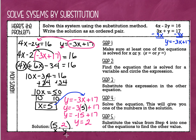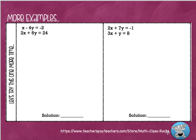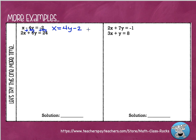I know that can be a little overwhelming when you do the first example, but I think when you watch another one it will become more clear. This system is x minus 4y equals negative 2, and 2x plus 6y equals 24. Again, I have to solve one of these for either x or y. I'm going to look for the one that has a plain variable — the first equation has this plain x, so it would be really easy to solve for x. I can just get this 4y over to the other side by adding 4y on both sides, and that changes the first equation into x equals 4y minus 2.